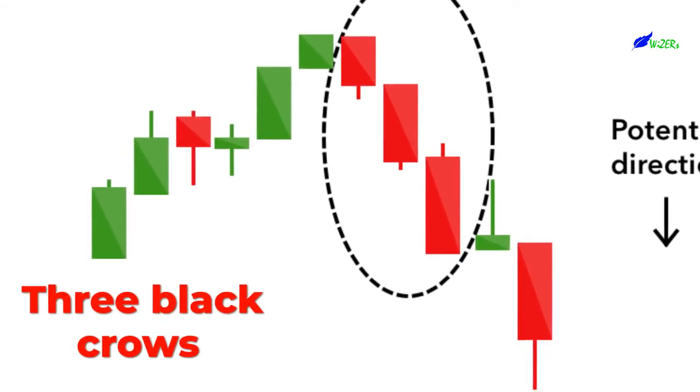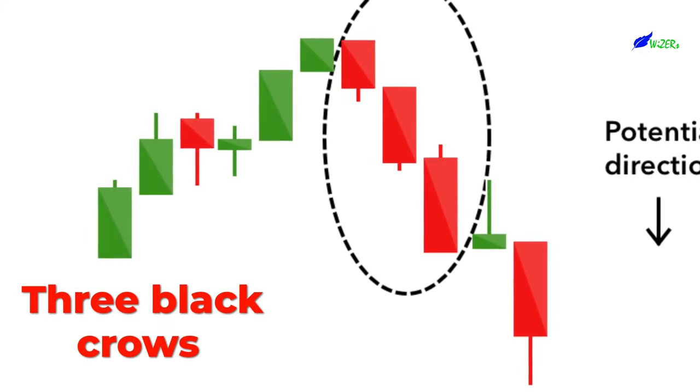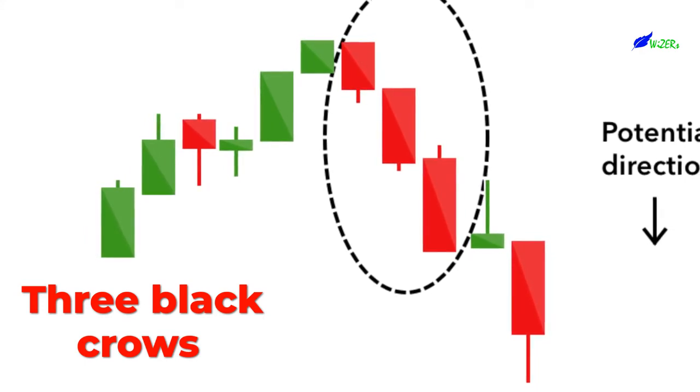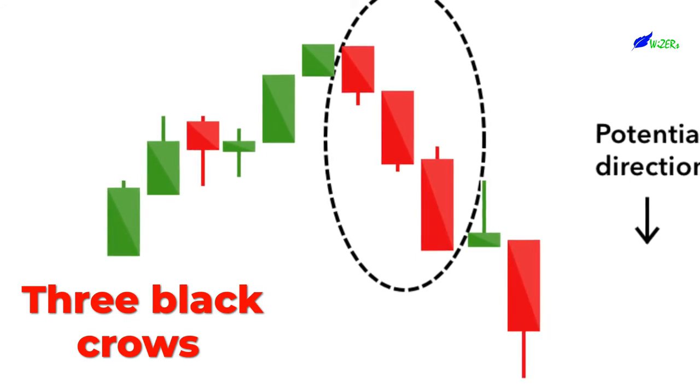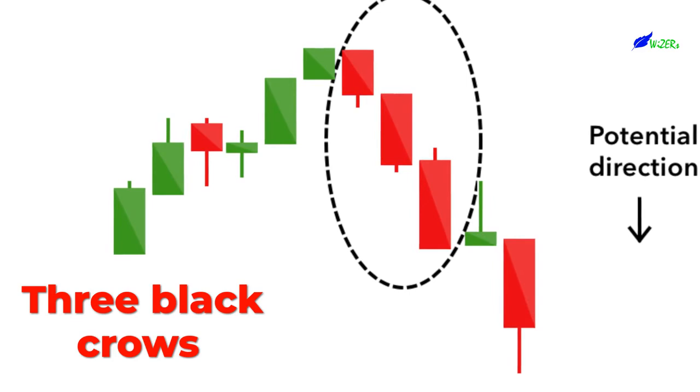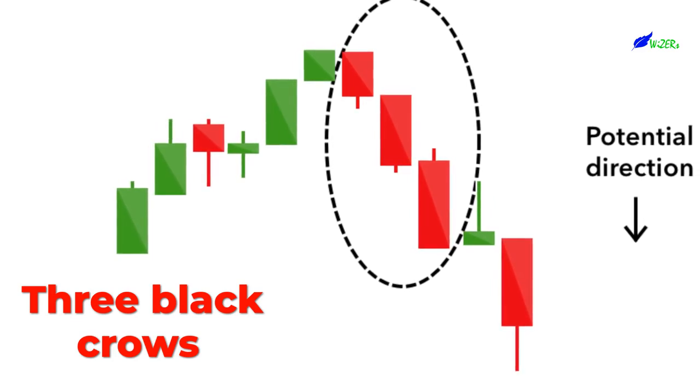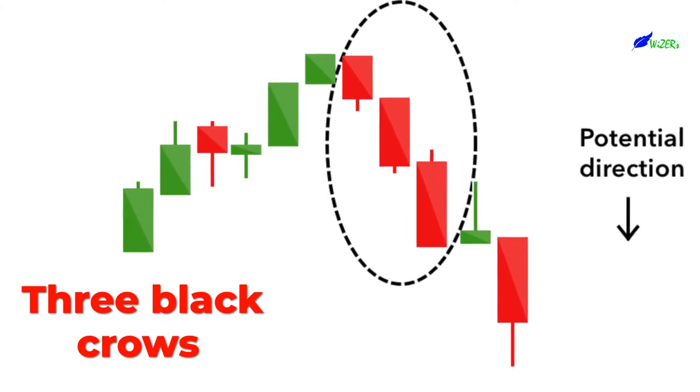The Three Black Crows Candlestick pattern comprises of three consecutive long red candles with short or non-existent wicks. Each session opens at a similar price to the previous day, but selling pressures push the price lower and lower with each close. Traders interpret this pattern as the start of a bearish downtrend, as the sellers have overtaken the buyers during three successive trading days.